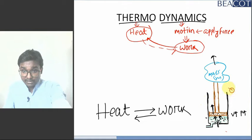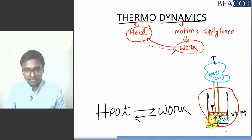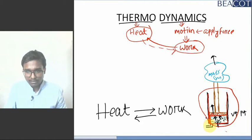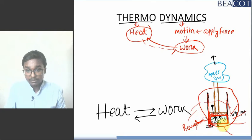If I consider this cylinder piston as my system, this is my boundary. Inside the system, this cylinder is my system. After supplying the fuel and closing everything, this is the closed system. The wall of the cylinder or the piston is called the boundary. And outside to that system, whatever is there, is called the surrounding.